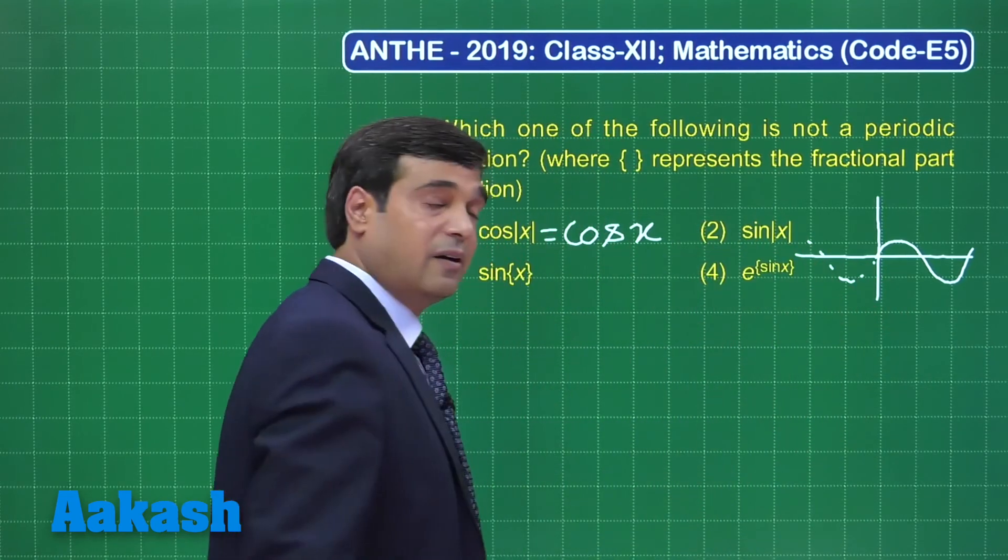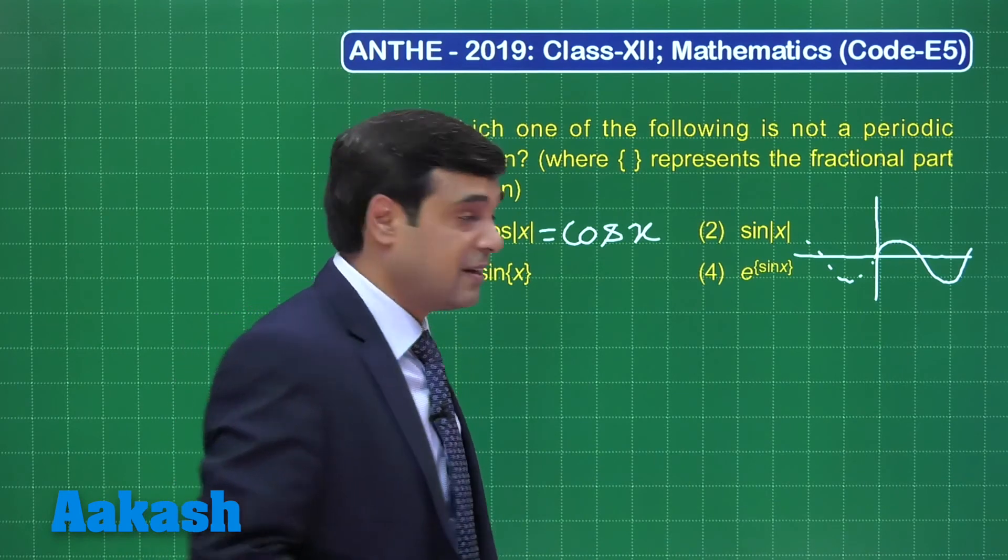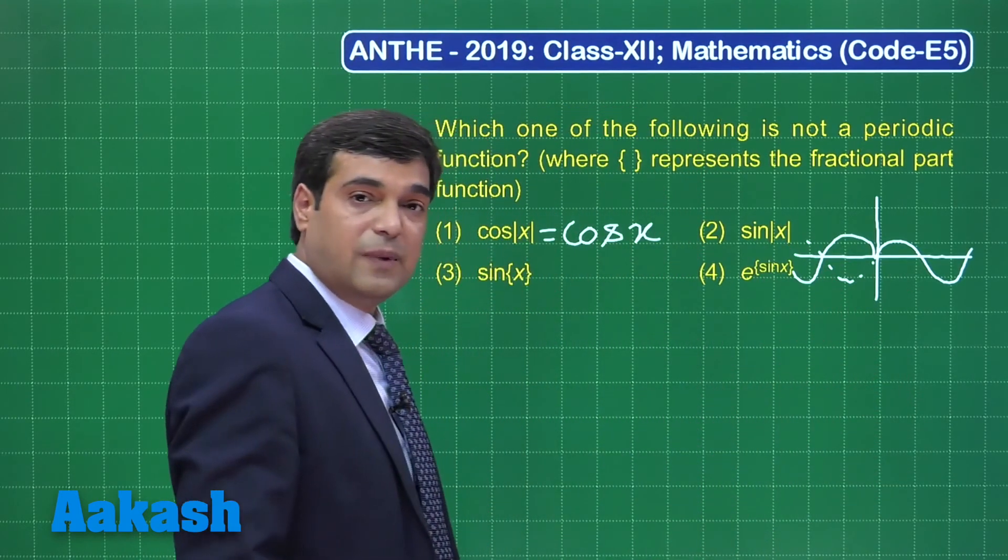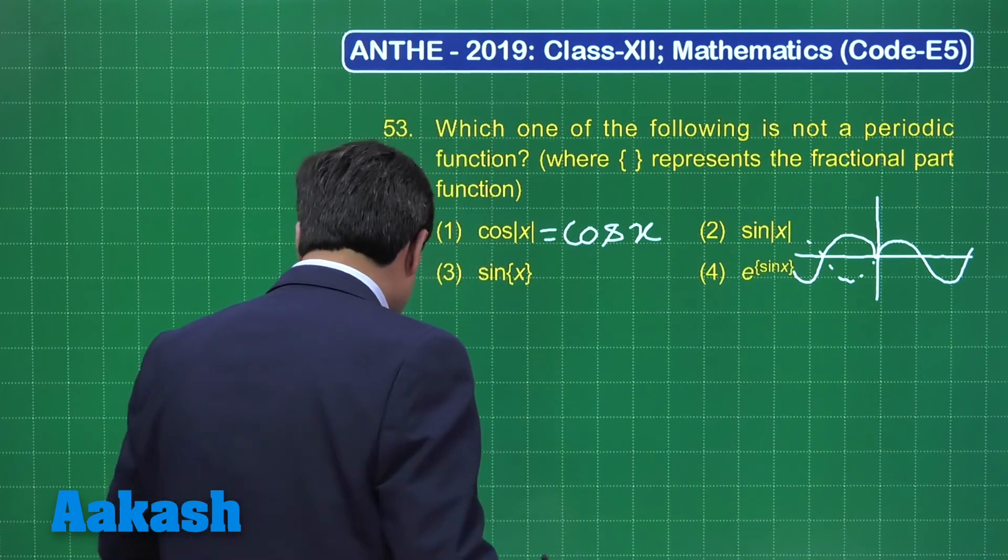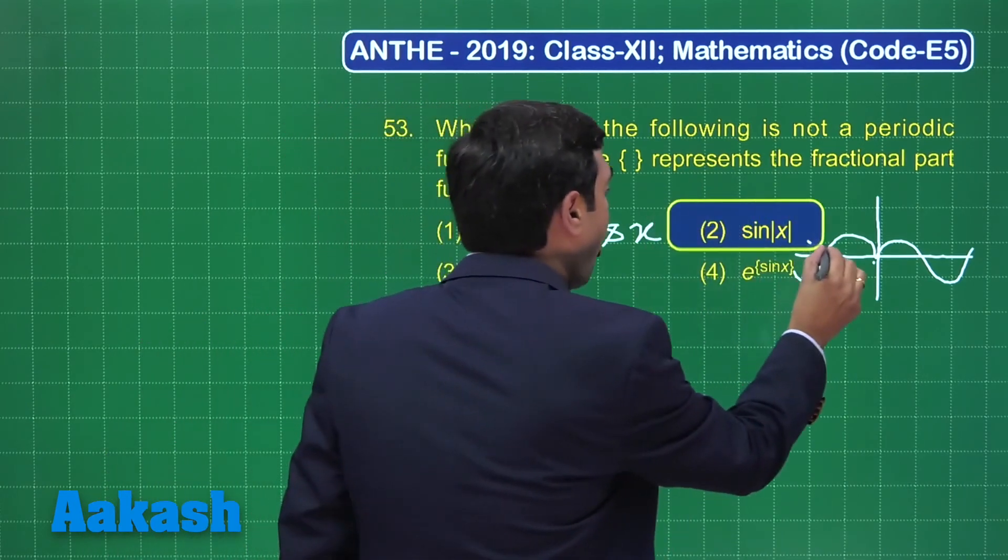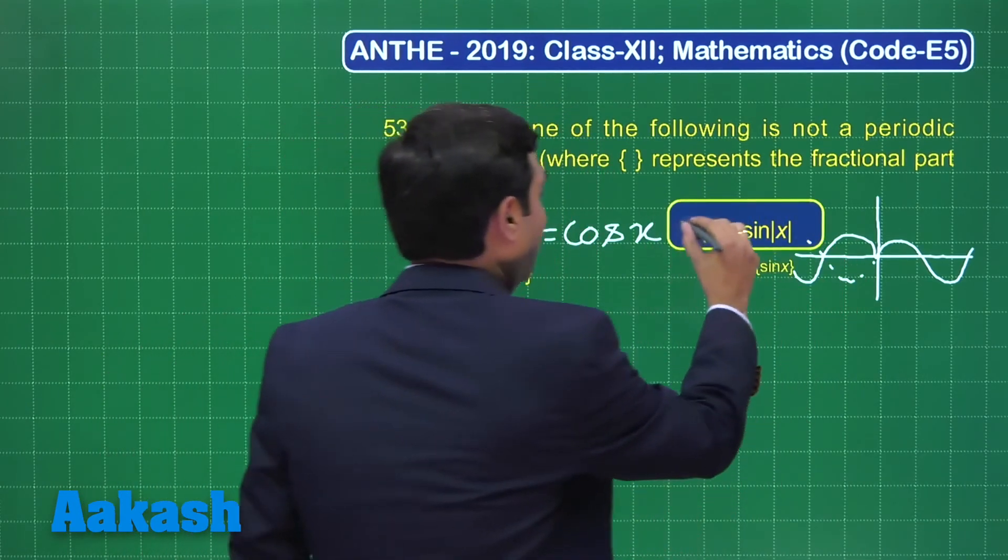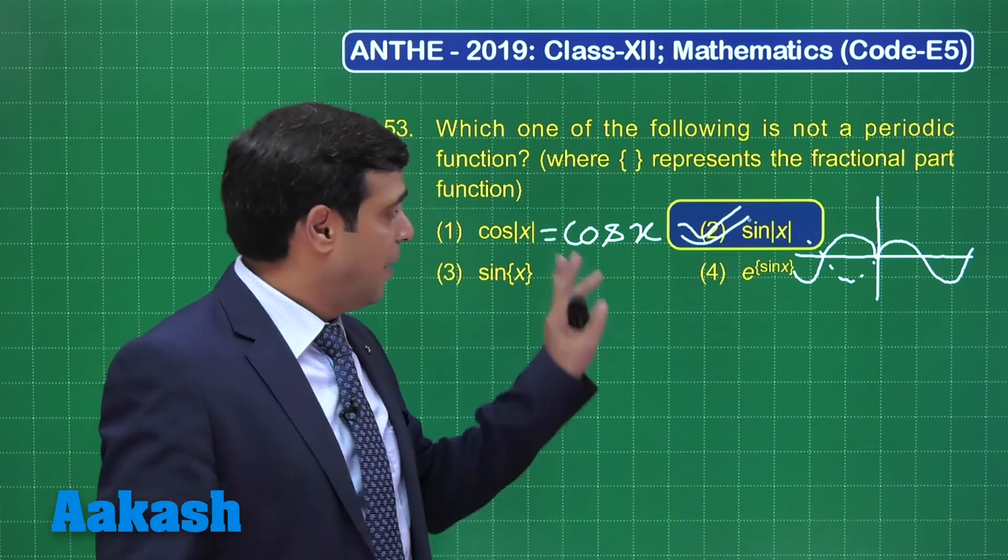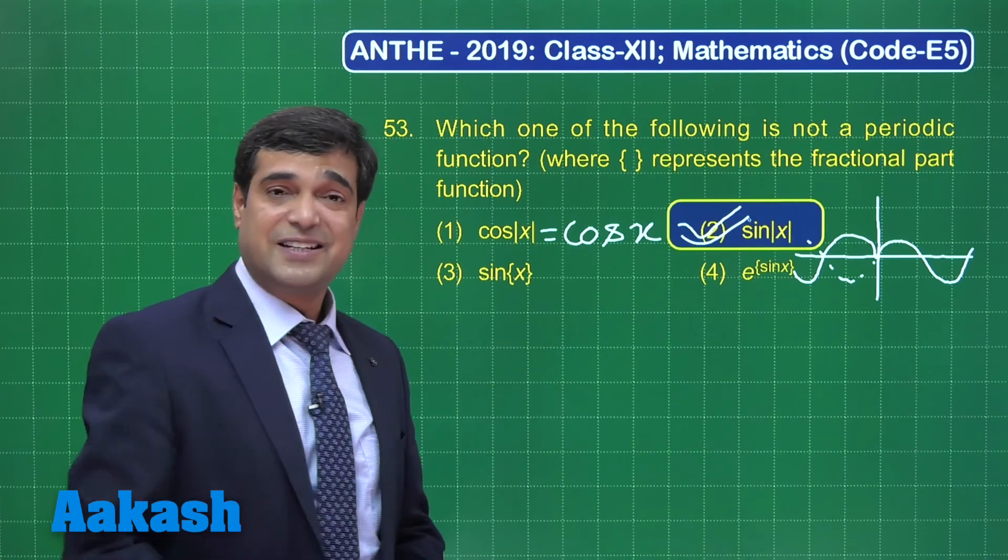But when you talk about sine of mod x, what's going to happen? It will be moving in this fashion. Yes, this function is non-periodic. Clearly, option number two is the correct answer. Similarly, you can check third and fourth - both are periodic. I am sure this question is clear. Let's consider the next one.